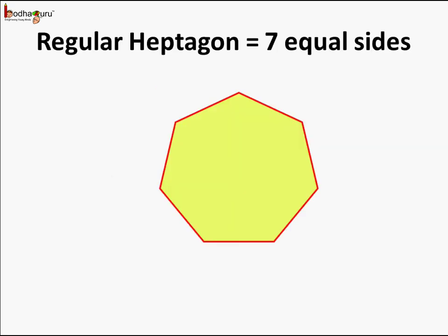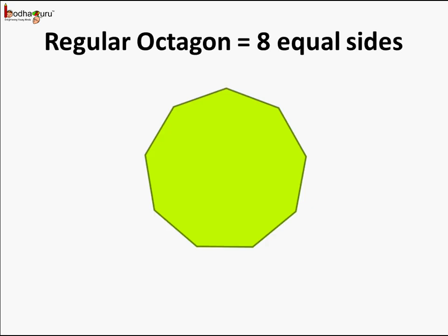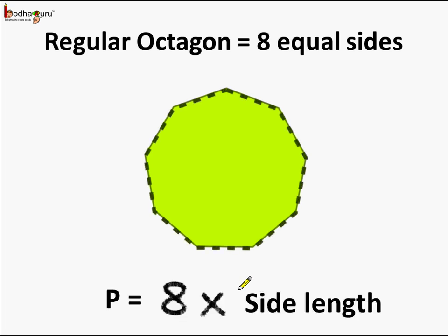A heptagon is a 7-sided closed figure. And if all 7 sides are of equal length, then we say it is a regular heptagon, and the perimeter in this case will be equal to 7 times the side length. In an octagon there are 8 sides, and when the length of each side is equal, it becomes a regular octagon. The perimeter of a regular octagon will be equal to 8 times the side length.